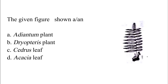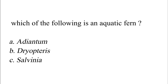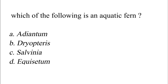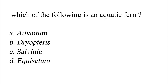The given figure shows: Option A: Adiantum plant. Option B: Dryopteris plant. Option C: Cedros leaf. Option D: Acacia leaf. The correct answer is Option B — Dryopteris plant. Which of the following is an aquatic fern? Option A: Adiantum. Option B: Dryopteris. Option C: Salvinia. Option D: Equisetum. The correct answer is Option C — Salvinia.